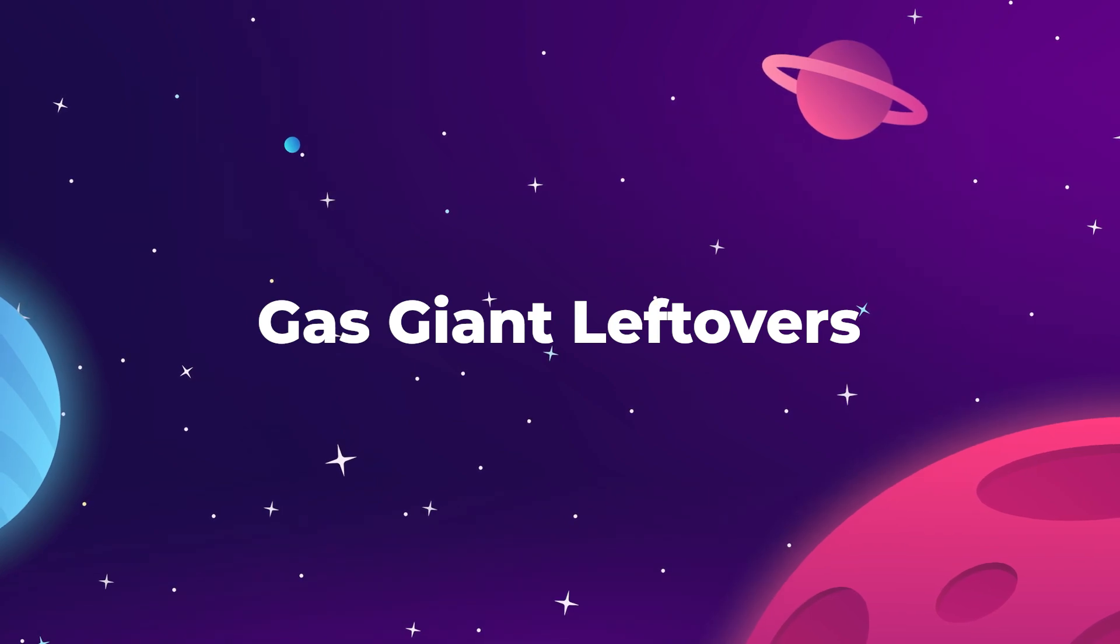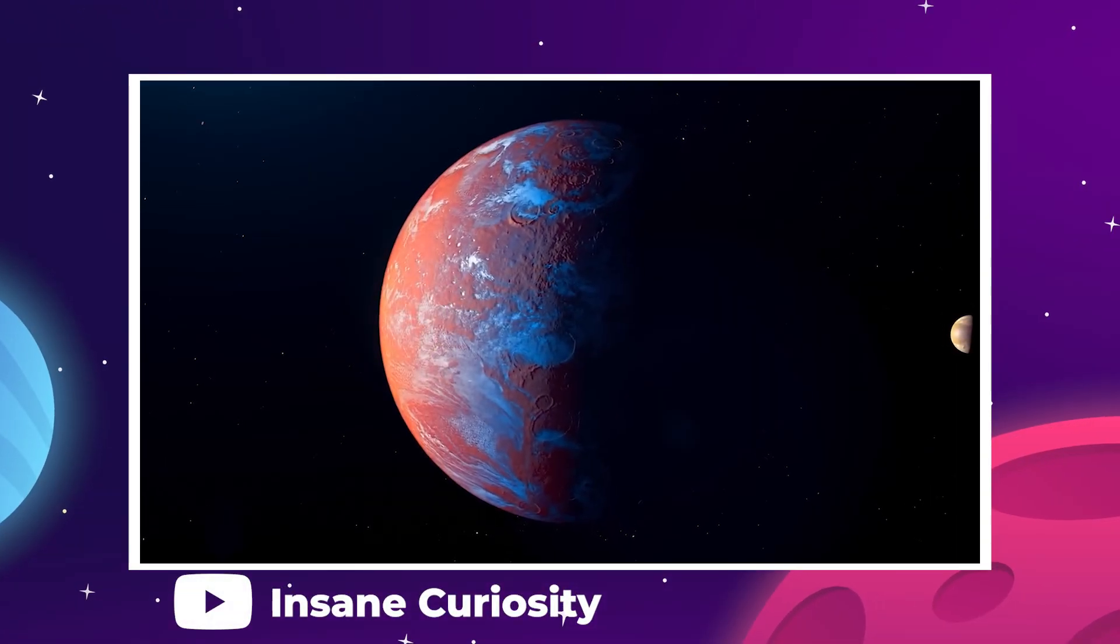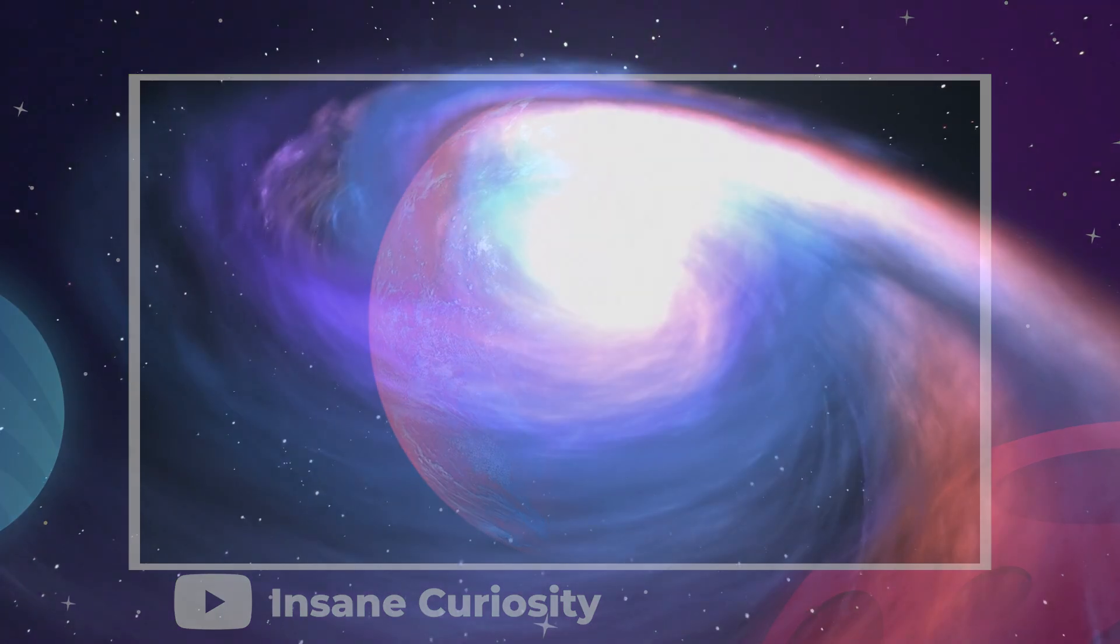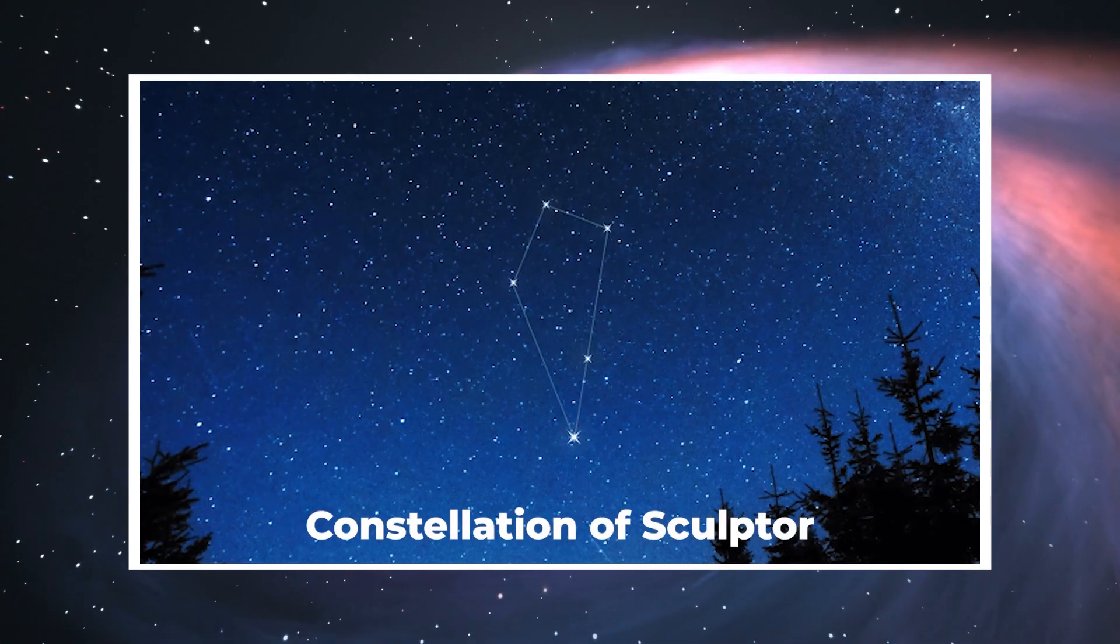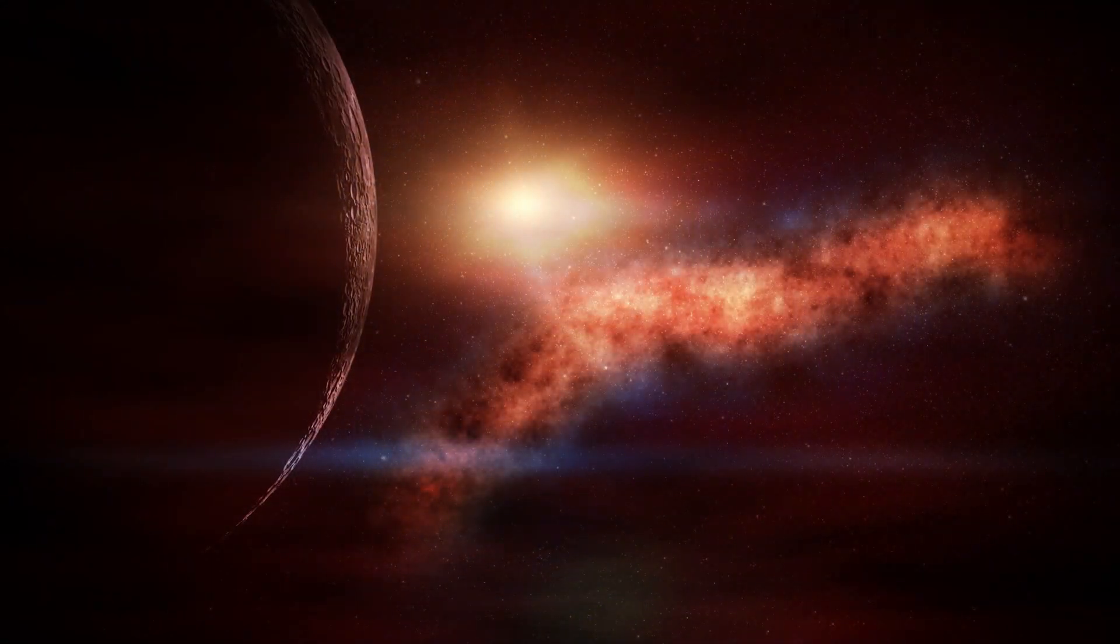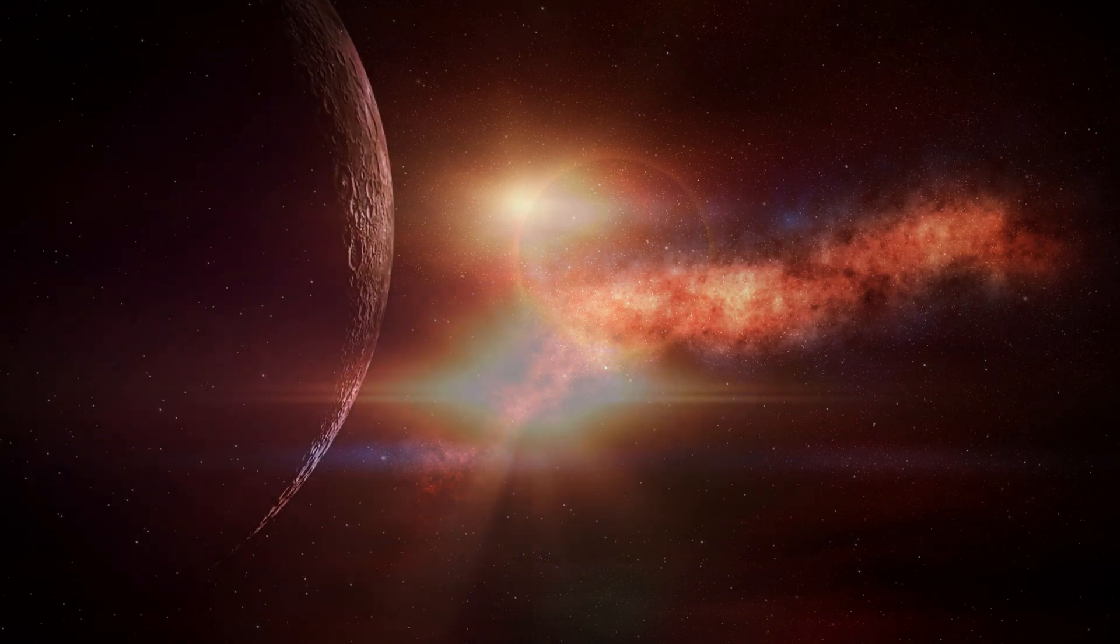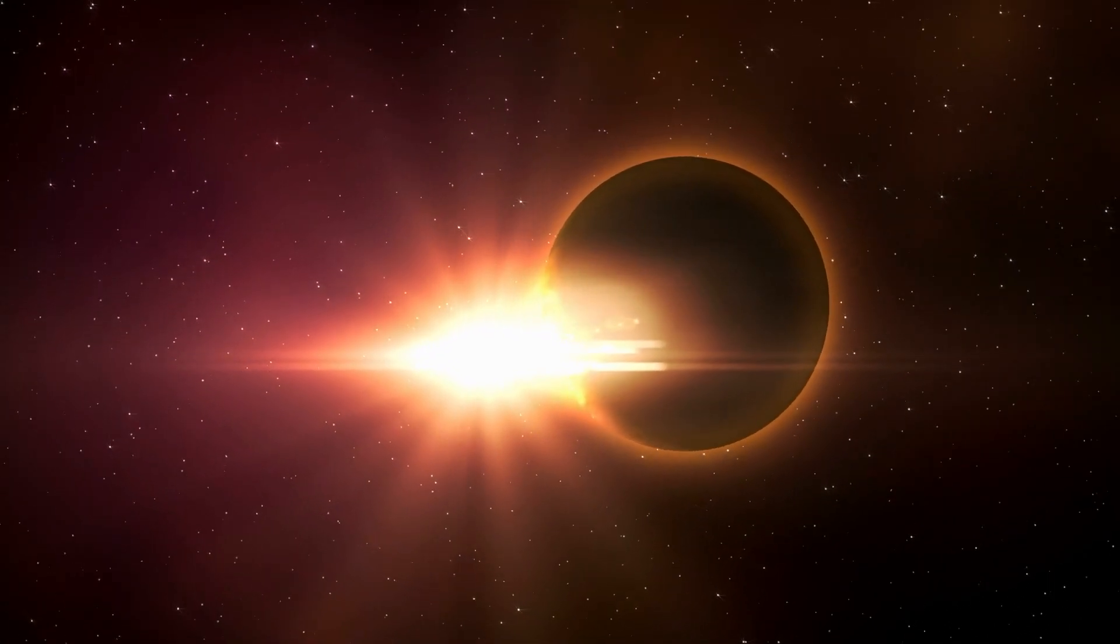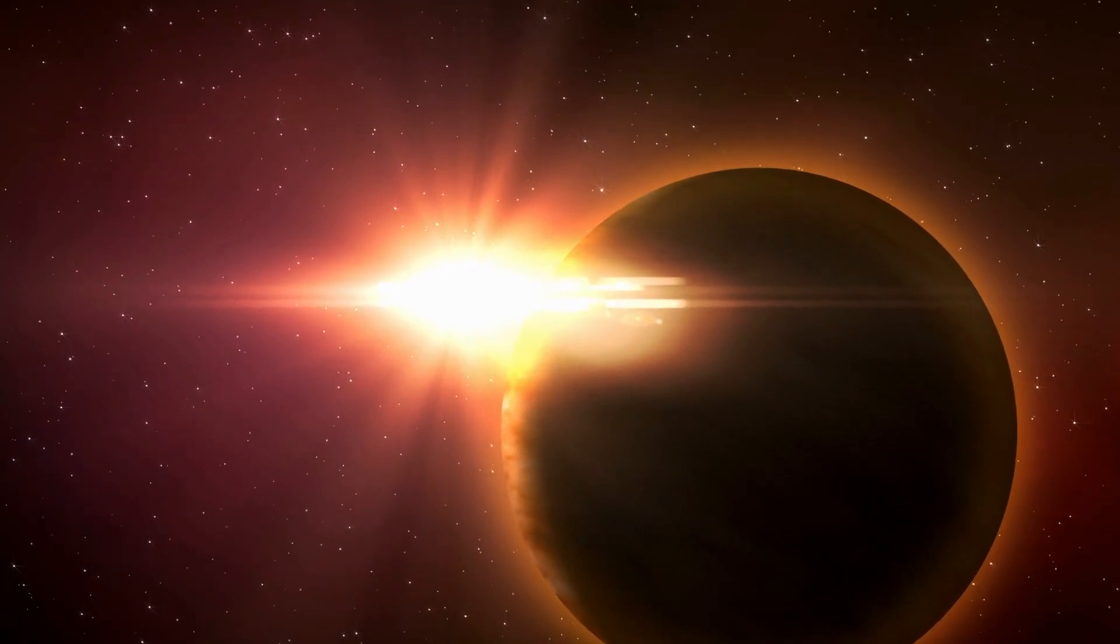Exoplanet TOI 849b is a solid ball of iron and rock about the size of Neptune that is getting a second chance at life. Located 741 light-years away in the constellation of Sculptor, this is actually believed to be the remaining core of a gas giant like Jupiter that had its gaseous atmosphere blown away at some time long in the past.